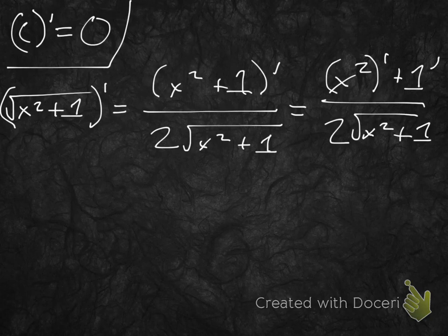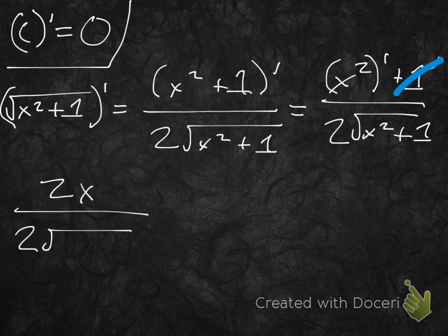Now the derivative of 1 is just 0, so we don't even need to worry about that. And we know that the derivative of x squared is just 2x, so we're going to keep our 2x on the top here. So 2x over 2 times radical x squared plus 1.